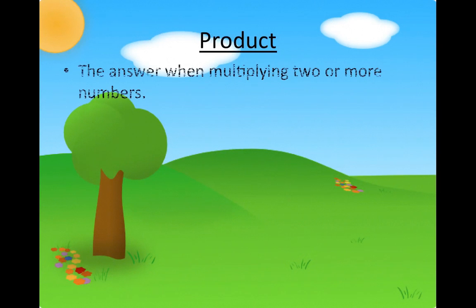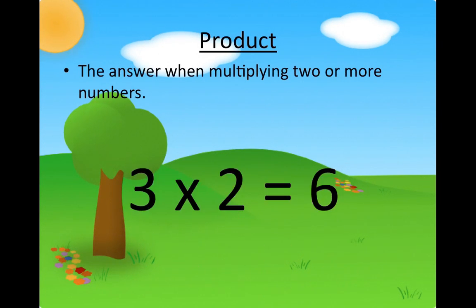Product. The answer when multiplying 2 or more numbers. In the example 3 times 2 equals 6, 6 is the product.